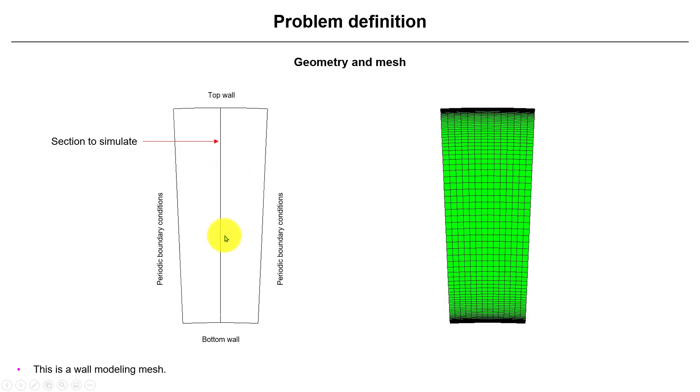And that is what we are going to see. So see that we have a small section of that pipe. So here we're going to do the sampling, the velocity sampling, and then we have just the flow going this way. So see that we have a nice mesh, a wall-resolving mesh. So this should be a wall-resolving mesh.